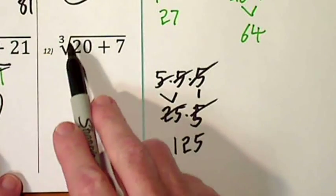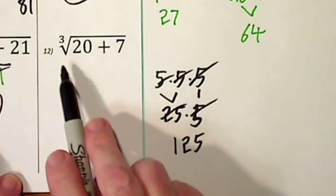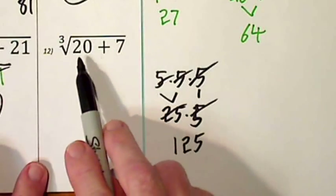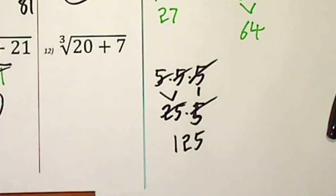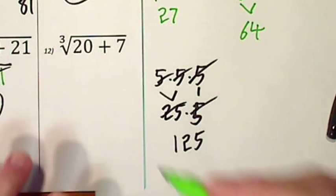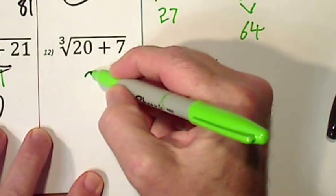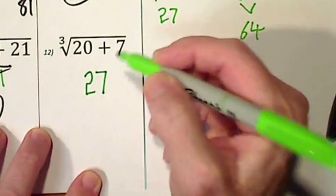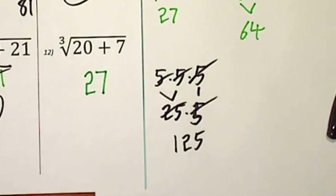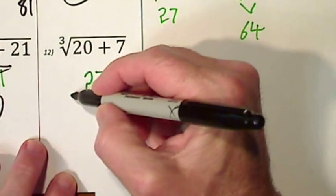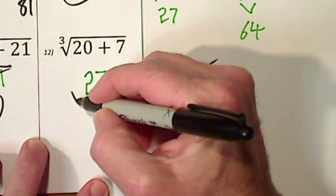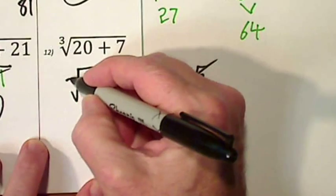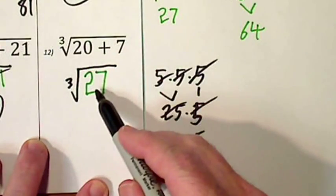Keep in mind that the radical symbol is a grouping symbol. So first we'll add the 20 and the 7. That will give us 27. But again, I have not taken the cube root of this number. I've only combined what's inside the radical symbol.